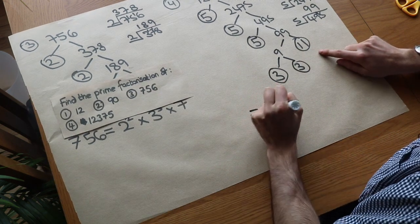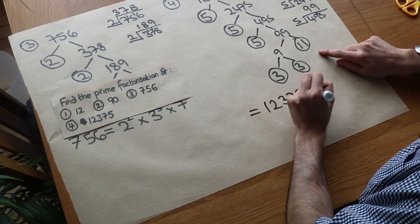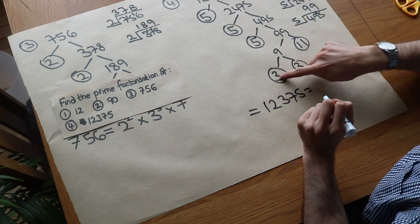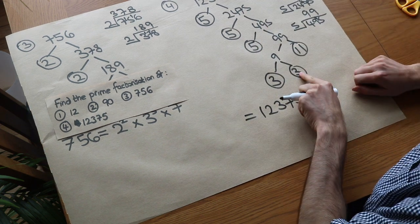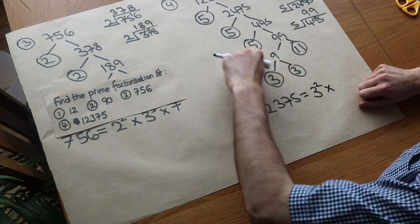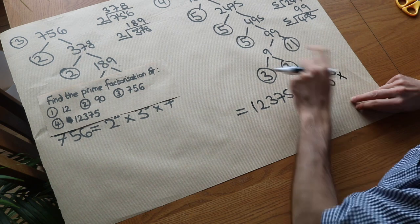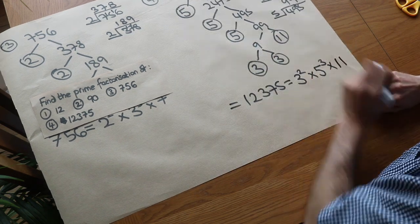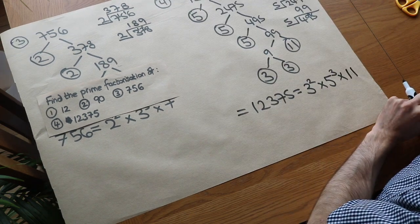Now we can just write this as the product of all these leaves, these circled numbers. So let's start with the smallest number. We've got 2, 3, so it's 3 squared. How many 5's have we got? 1, 2, 3. So 5 cubed. And we've got that 11 there. So 11. And that is the prime factorization.